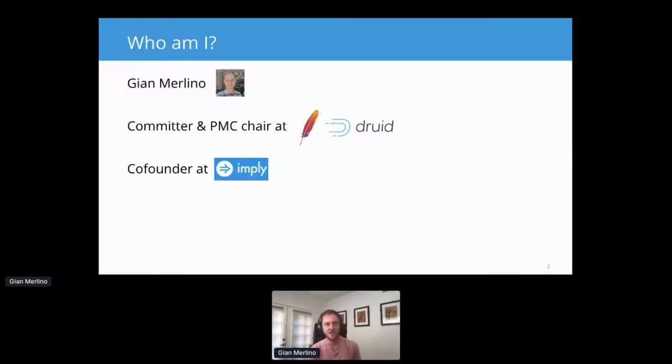So who am I? Hi, I'm Gian Merlino. Like Richard mentioned, I'm a committer and PMC chair at Apache Druid. And I'm also co-founder of Imply, which is a company that is built around Apache Druid and where we spend a lot of time and effort contributing to Apache Druid. And a little plug, if you're interested in getting paid to work on projects like Druid, then give me a chat afterwards.